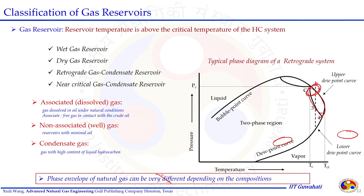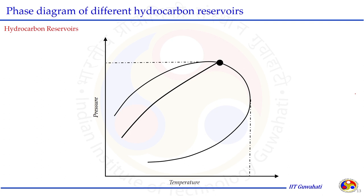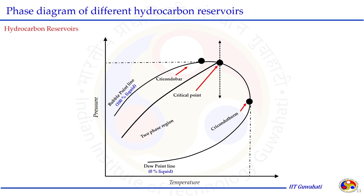Let us understand the classification of hydrocarbon reservoirs on the temperature-pressure scale. The bubble point curve is the 100% liquid curve, the dew point curve is the 0% liquid curve, and the two-phase region is between them. Several tie lines exist between the dew point curve and bubble point curve representing different liquid loading percentages. The bubble point and dew point curves merge at the critical point. Cricondenbar is above the critical pressure; Cricondentherm is above the critical temperature. Beyond these highest points, we have only a single phase.